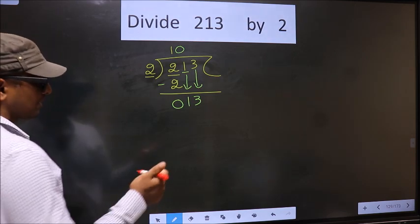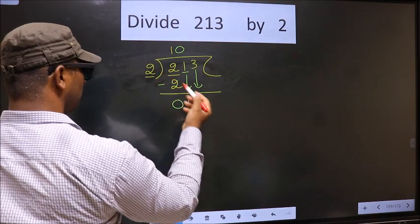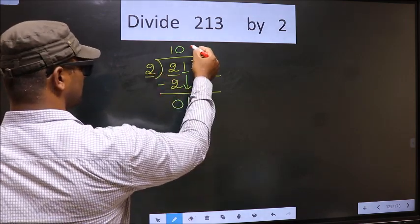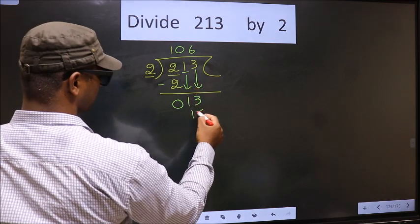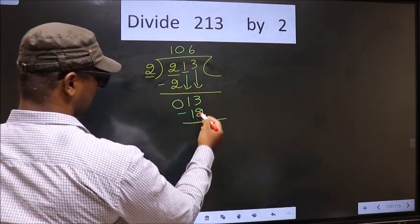Next. Now here you have 13, here 2. A number close to 13 in the 2 table is 2, 6, 12. Now you subtract. 13 minus 12, 1.